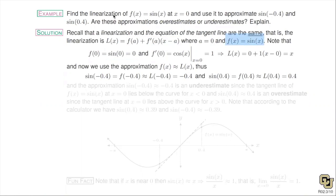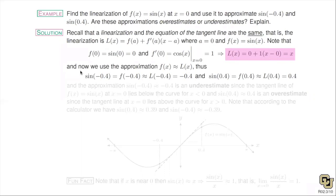The derivative of sin(x) is cos(x), evaluated at zero — and cosine of zero, from the unit circle, equals one. So the linearization ends up being quite simple: L(x) = x. For x near zero, I'm approximating sin(x) with x.